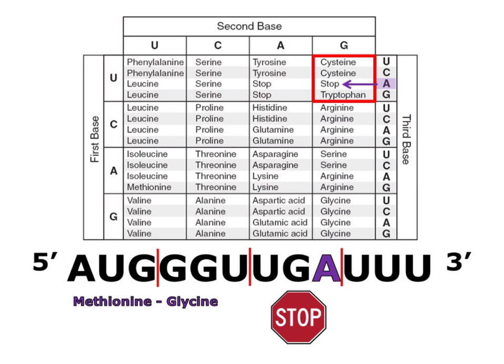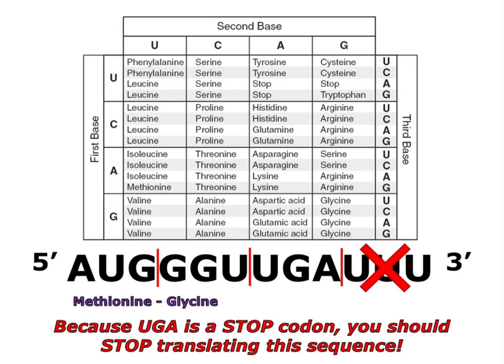You can see that I put a stop sign underneath UGA, because stop codons mean stop. Stop codons don't actually code for an amino acid — they communicate to the ribosomes that the protein is finished. Because UGA is the stop codon, you should stop translating this sequence. You would not translate the UUU because it follows the stop codon.